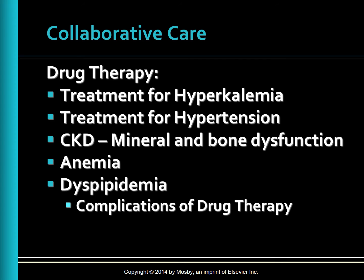The progression of CKD can be delayed by controlling hypertension. Treatment for hypertension includes weight loss if obese, lifestyle changes including exercise, avoiding alcohol, smoking cessation, and reducing stress. Calcium channel blockers, ACE inhibitors, and angiotensin receptor blockers (ARBs) are used to control hypertension.